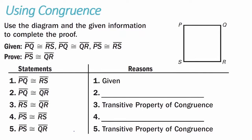Example two, using congruence: use the diagram and the given information to complete the proof. We are given that line segment PQ is congruent to line segment RS, and also that line segment PQ is congruent to line segment QR. We are told that line segment PS is congruent to line segment RS — since they share tick marks, they are congruent. Our goal is to prove that line segment PS is congruent to line segment QR.